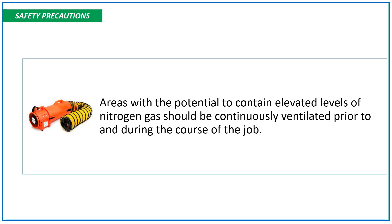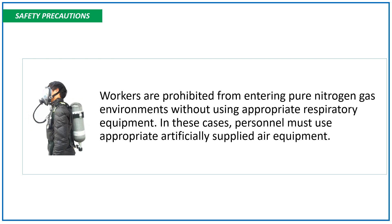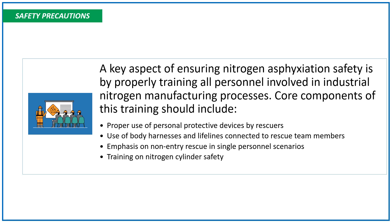Areas with potential to contain elevated levels of nitrogen gas should be continuously ventilated prior to and during the course of the job. Workers are prohibited from entering pure nitrogen gas environments without using appropriate respiratory equipment; in these cases, personnel must use appropriate artificially supplied air equipment. A key aspect of ensuring nitrogen asphyxiation safety is by properly training all personnel involved in industrial nitrogen manufacturing processes. Core components of this training should include proper use of personal protective devices by rescuers, use of body harness and lifelines connected to rescue team members.